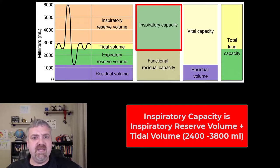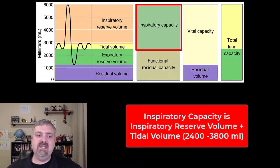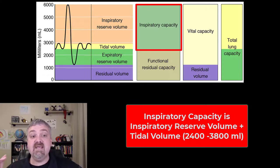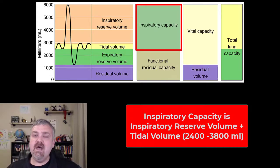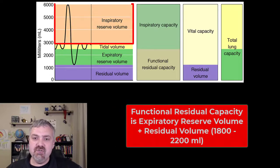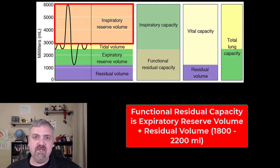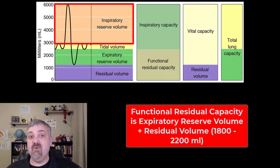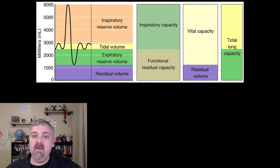We have the inspiratory capacity versus your functional residual capacity. Your inspiratory capacity would be your tidal volume — your normal breath in — plus that inspiratory reserve volume. That is going to be between 2,400 and 3,800 milliliters. Your functional residual capacity would be how much air you have in your lungs after you've taken a normal quiet breath out, and that is going to be between 1,800 and 2,200 milliliters. The big ones so far have been your tidal volume and your two reserve volumes — those are the most important ones.